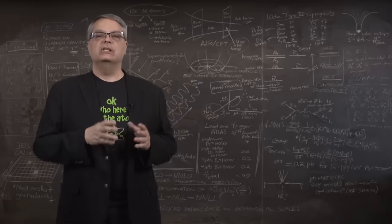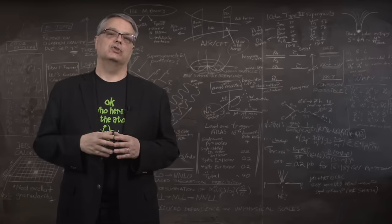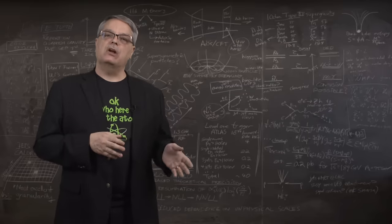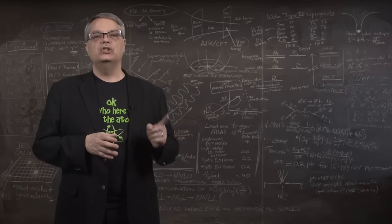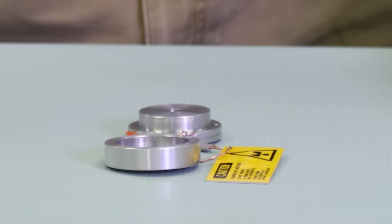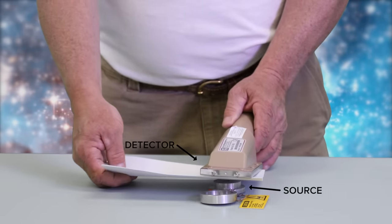Alpha radiation consists of heavy and slowly moving particles with a lot of electrical charge. These properties combine to make them easy to stop. You can stop alpha particles using a single sheet of paper. Here, I'll show you. Here is a sample that emits alpha particles in a Geiger counter. The paper stops the radiation.